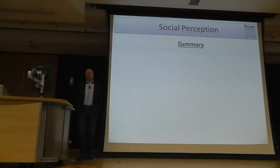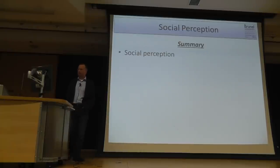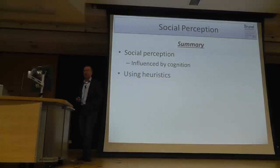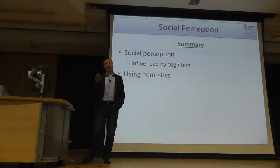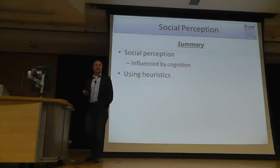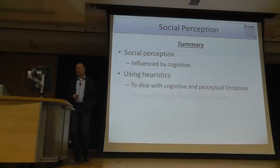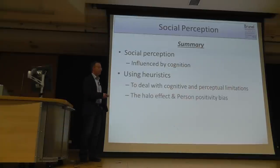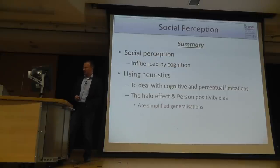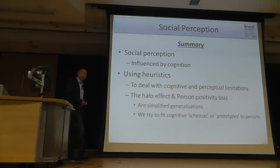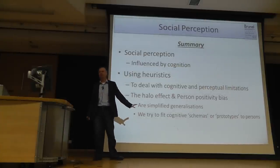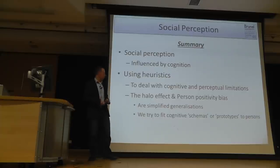To summarize social perception: it is influenced by our cognition and cognitive abilities. Our limits in attention and working memory make it necessary to use heuristics to pick up the information we need. We have seen the halo effect and the person positivity bias. What we basically do is try to fit schemas or prototypes to a person because we tend to simplify in that way.